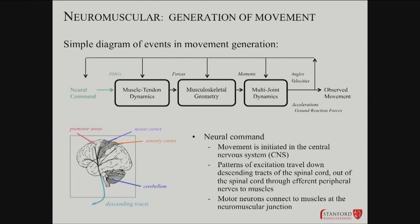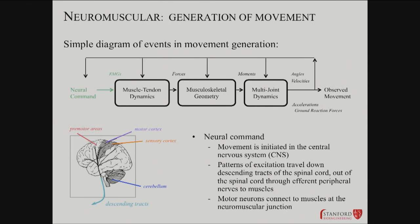So, generating movement — what is the sequence of systems that are interacting? You've got a neural command. We've talked about the central nervous system and the peripheral nervous system. You end up having to think about the muscles contracting, and they pull on tendons. That leads to questions about musculoskeletal geometry — what are the moments around a joint? What are the forces and the opposing forces at play? And then to really understand things, you have to think about multi-joint dynamics. Nothing makes sense in isolation — a single joint doesn't tell you how someone walks or fails to walk normally.